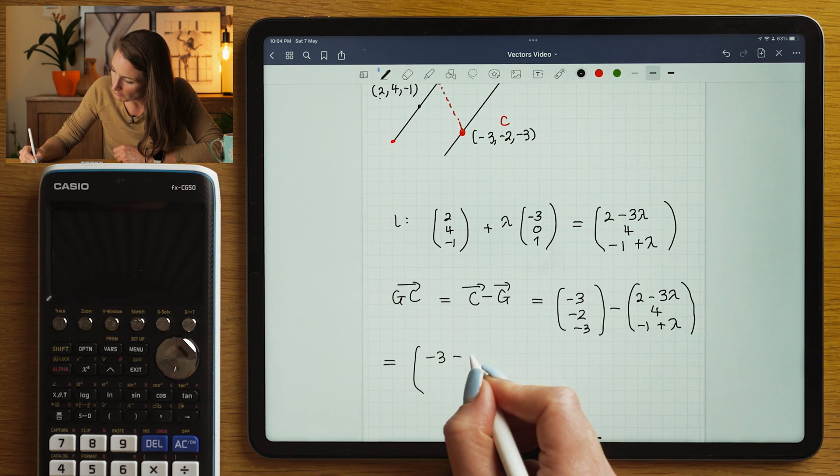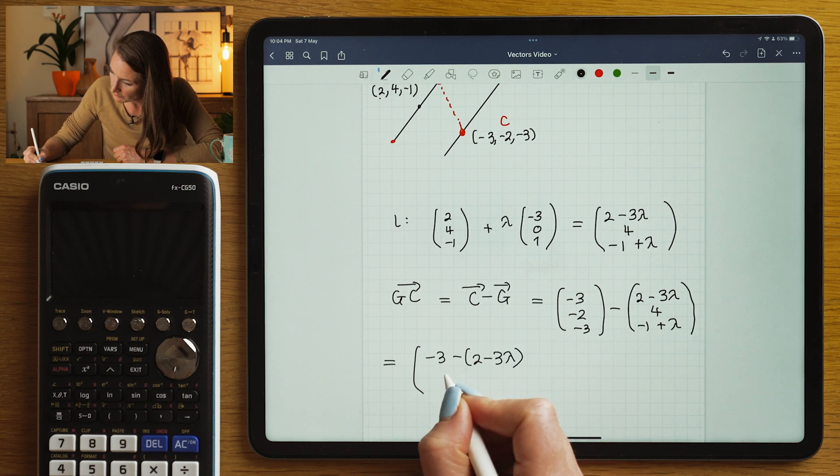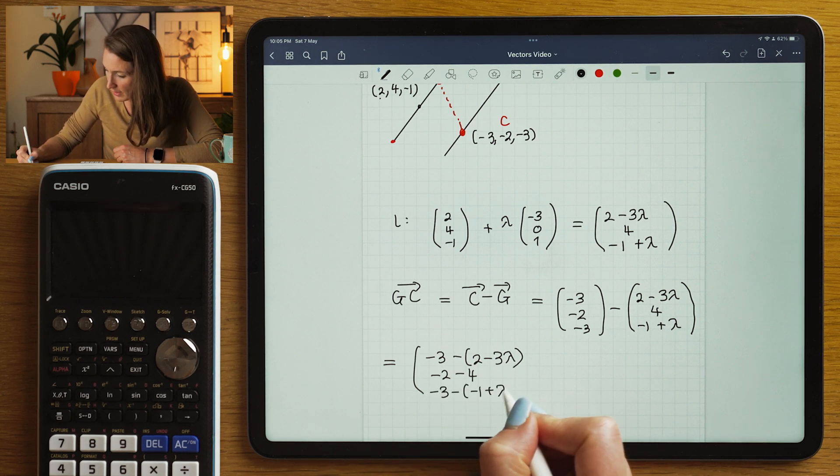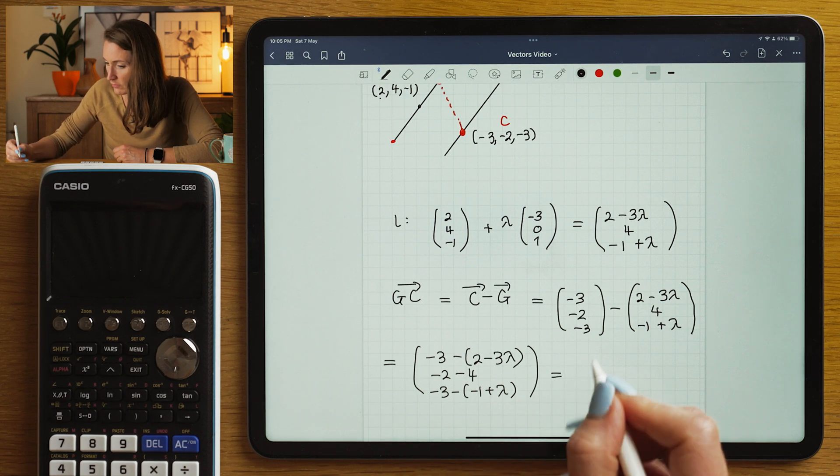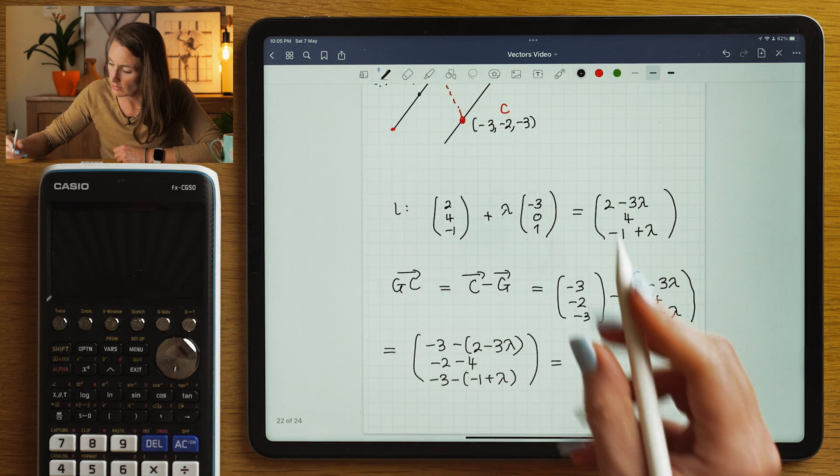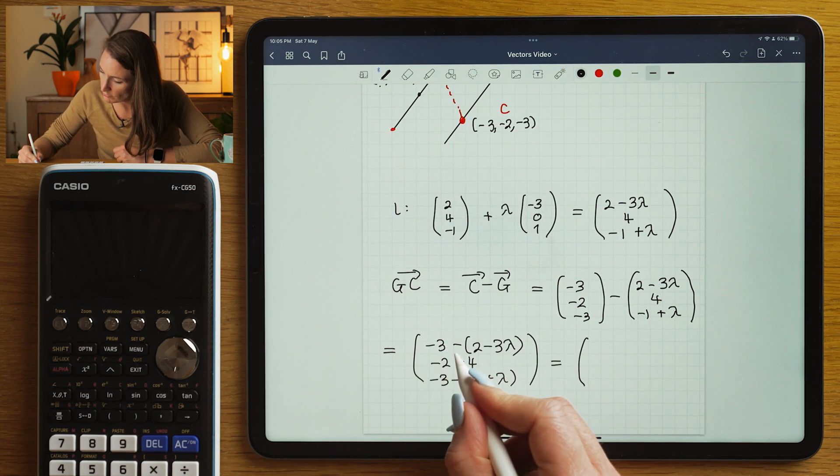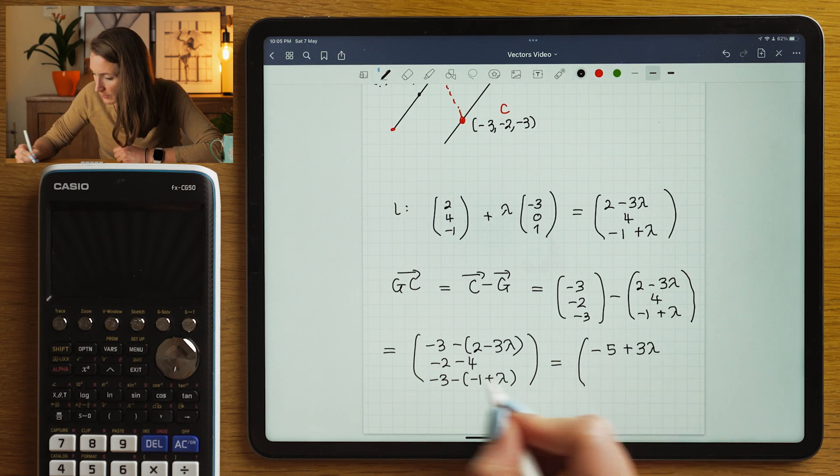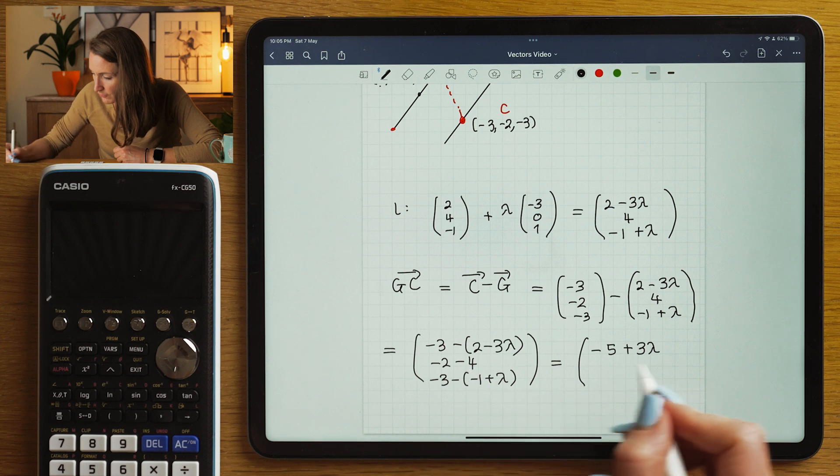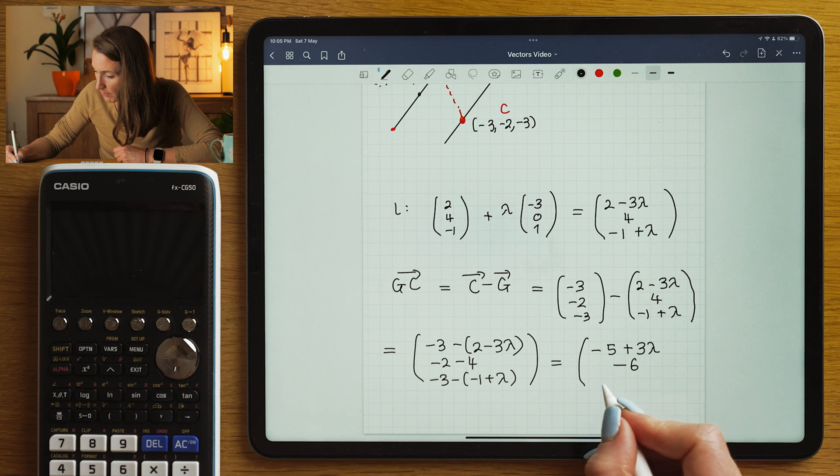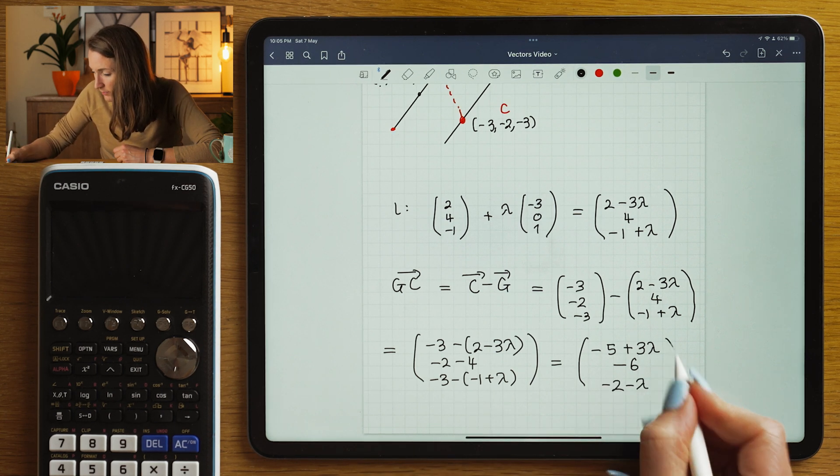So let's tidy that up a bit. We're going to have -3 minus 2 minus 3λ, -2 minus 4 here, and -3 minus (-1+λ). So this vector here that crosses the void or the space between them is going to be in terms of lambda.